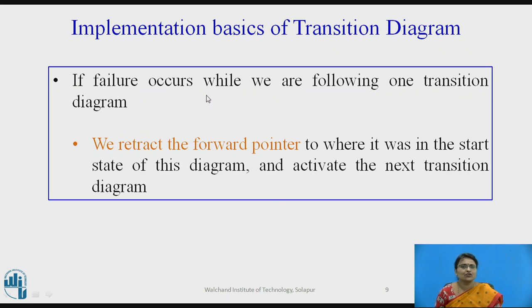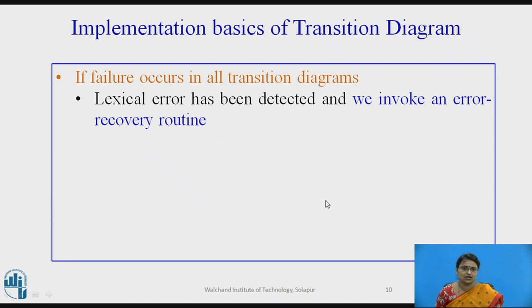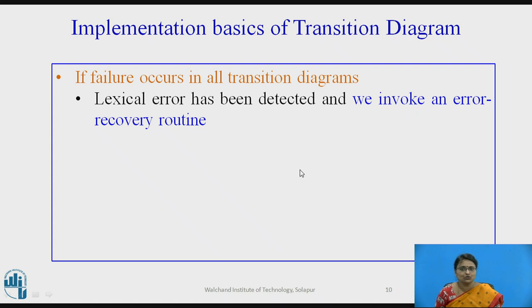What happens if a failure occurs in the current transition diagram? Since there are many transition diagrams, if failure occurs, the transition diagram retracts — it comes back to the beginning of the lexeme where it failed and activates the next transition diagram. If failure occurs in all transition diagrams, then the lexeme is not accepted, indicating an error, and the error recovery routine is called.